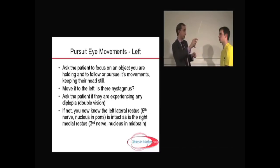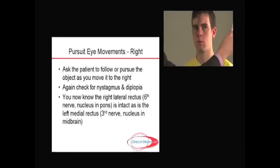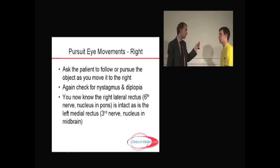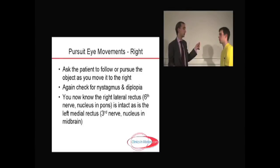Keeping the head still, now ask the patient to pursue the stick to the right. Again: do I see nystagmus? No. Do you see one or two objects? In his left eye, he's now using the medial rectus muscle supplied by the third nerve, the nucleus for which is in the midbrain. In his right eye, he's using the lateral rectus muscle supplied by the sixth nerve, the nucleus for which is in the pons.